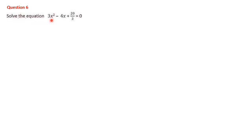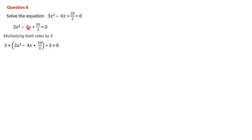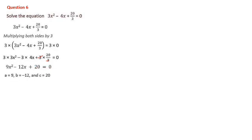Next, we shall discuss question number 6: Solve 3x² - 4x + 20/3 = 0. Multiplying both sides by 3 to eliminate the denominator: 9x² - 12x + 20 = 0. Here a = 9, b = -12, c = 20. Be careful with the sign of b.